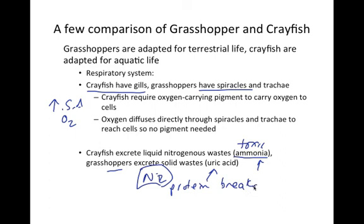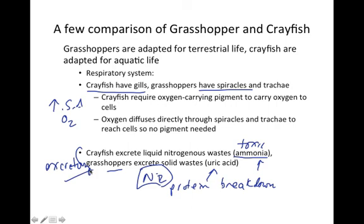These nitrogenous byproducts become toxic in the body, and one of the main goals of the excretory system is to remove these toxic wastes from the body — primarily from the blood.